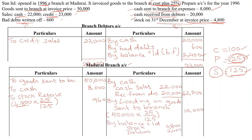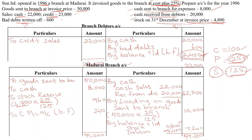Now we record the closing balance of assets. Closing stock is given in the question as 4,800. Closing balance of debtors is 2,400 from our calculation. The total of closing assets is 7,200. Tallying the ledger, the credit side totals 59,200, which is the highest total, so we record 59,200 on both sides. The balancing figure is 240, which is transferred to the general profit and loss account. This is how to calculate stock reserve and prepare the branch account when goods are sent at invoice price.